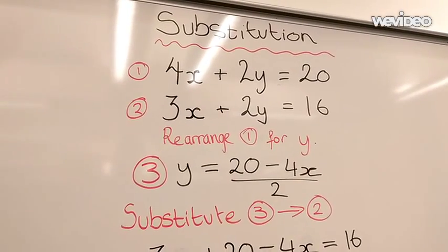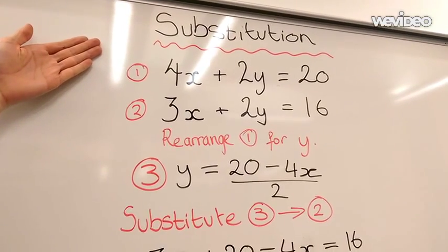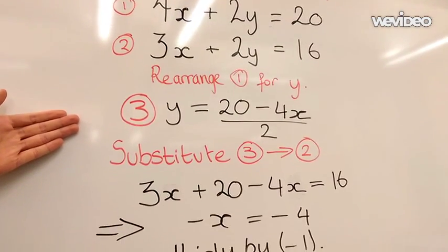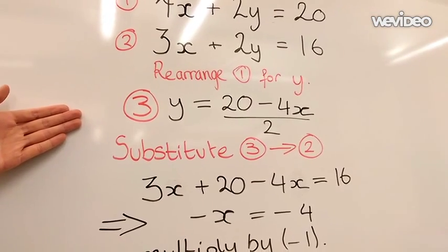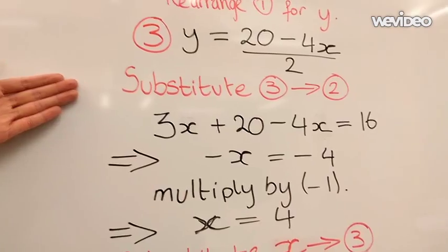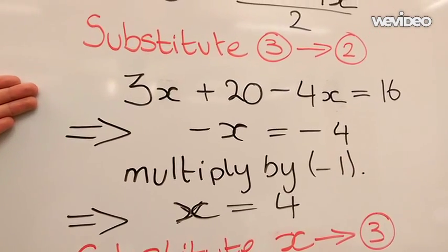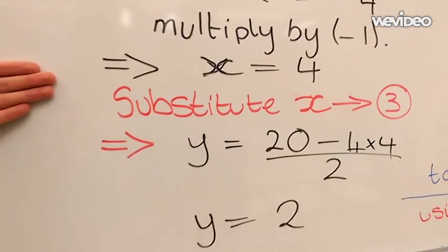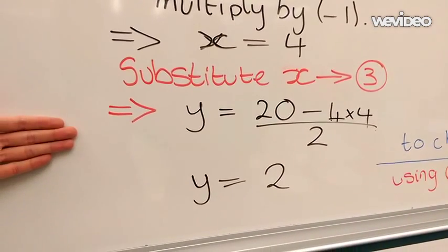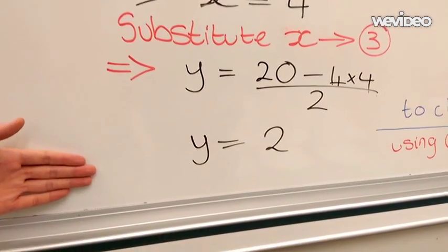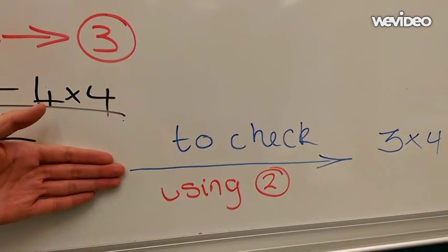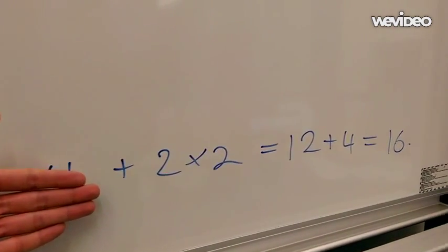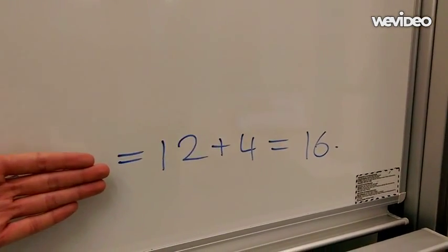Now, we will solve these two equations using the substitution method. We start off by rearranging equation 1 for y, which gives us equation 3: y equals 20 minus 4x, over 2. Now we substitute equation 3 into equation 2, which gives us 3x plus 20 minus 4x equals 16. Solving this, we have x equals 4. Now we substitute our x value into equation 3, which gives us the y value of 2. To check this, we substitute both x and y into equation 2. We have 3 times 4 plus 2 times 2, which gives us 12 plus 4, equalling 16.